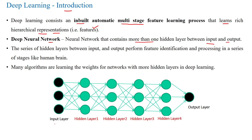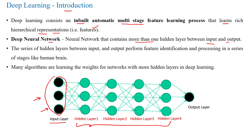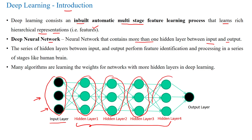Here we have the input layer represented with black color circles — all circles belong to the input layer. Then we have neurons in the hidden layers: these neurons belong to hidden layer 1, these to hidden layer 2, these to hidden layer 3, and these to hidden layer 4.